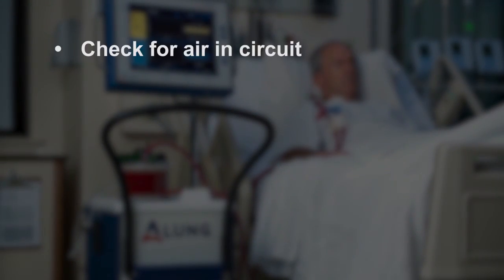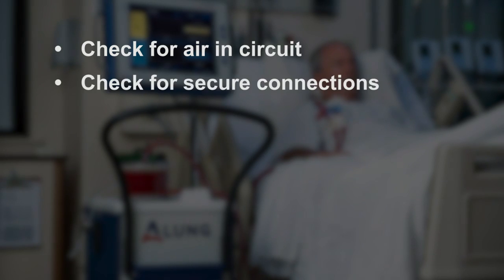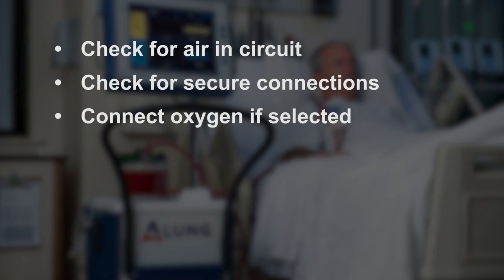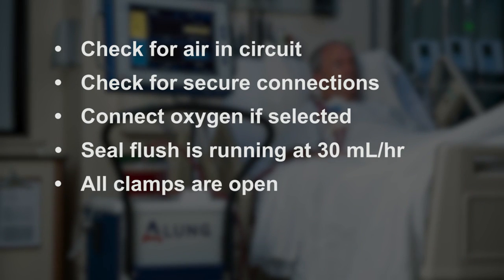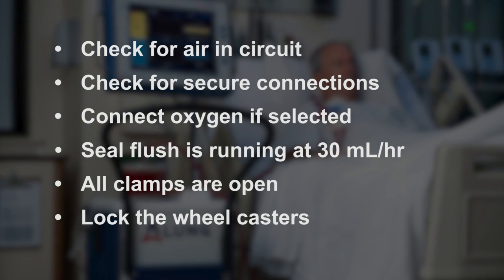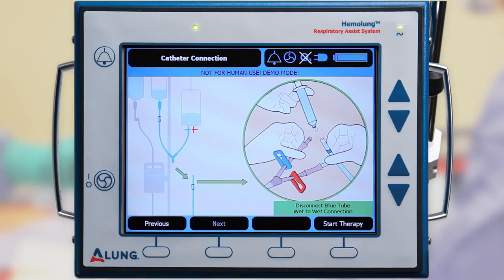To begin therapy, check for air in circuit and check for secure connections. Connect oxygen if selected. Ensure seal flush is running at 30 milliliters per hour. Ensure all clamps are open. Lock the wheel casters. Press Start Therapy.